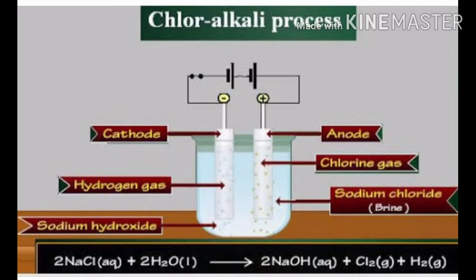Looking at the diagram, it shows how the aqueous solution of sodium chloride or brine gets decomposed. Chlorine gas is given off at the anode, the positive electrode, and hydrogen gas at the cathode, the negative electrode. Sodium hydroxide solution is formed near the cathode. The three different products in this process are all useful, as shown in the figure.